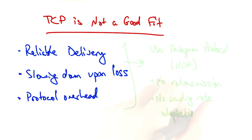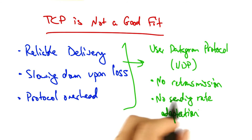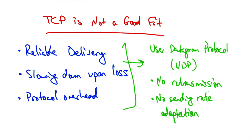Instead, one might consider using UDP. UDP does not retransmit lost packets, and it does not automatically adapt the sending rate. It also has a smaller header.